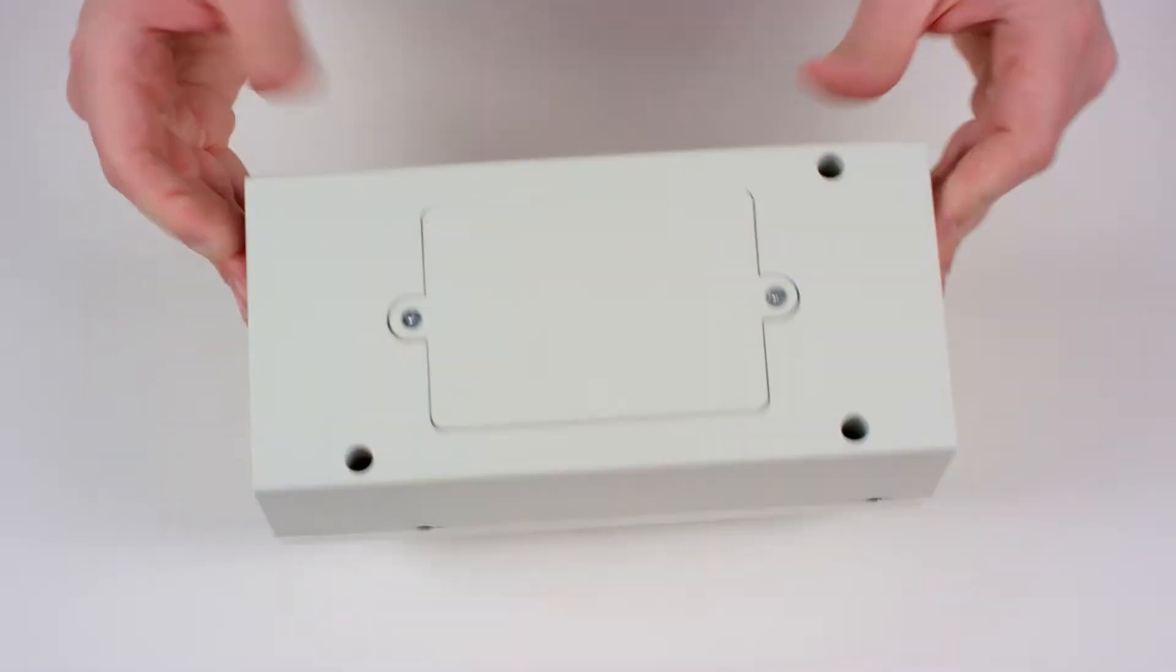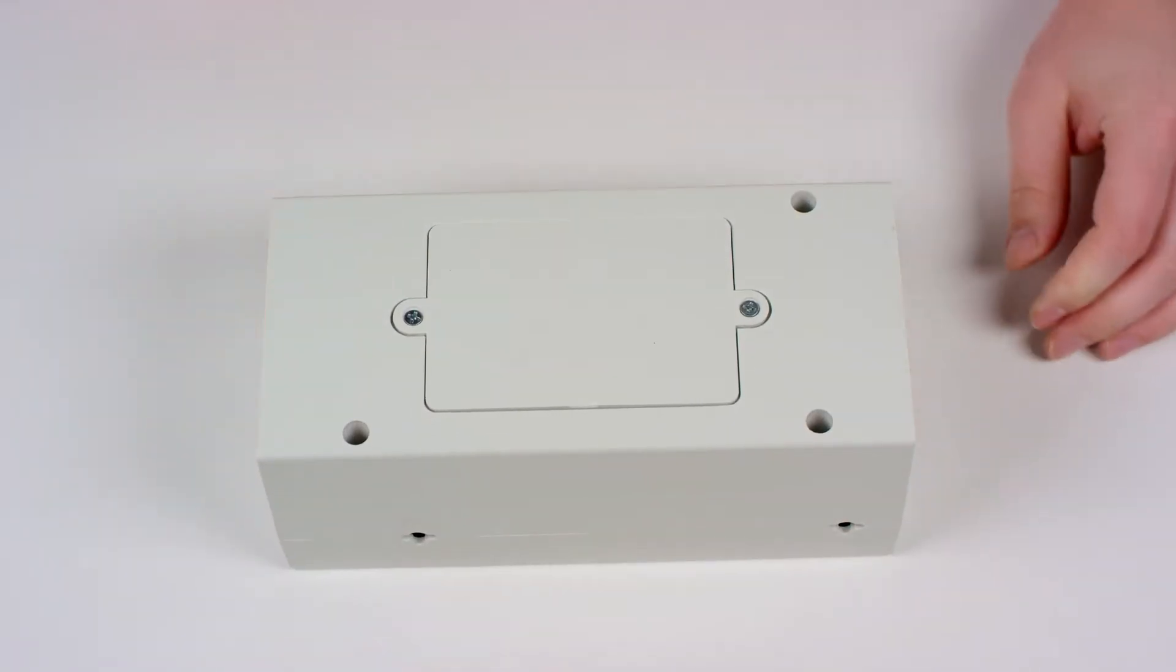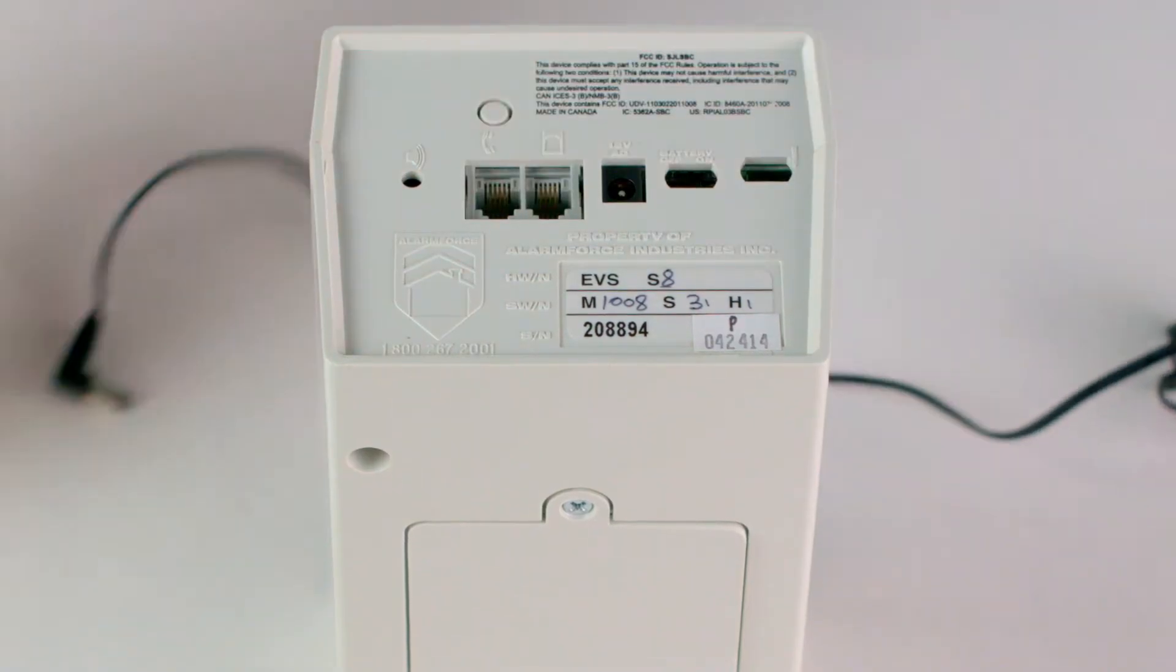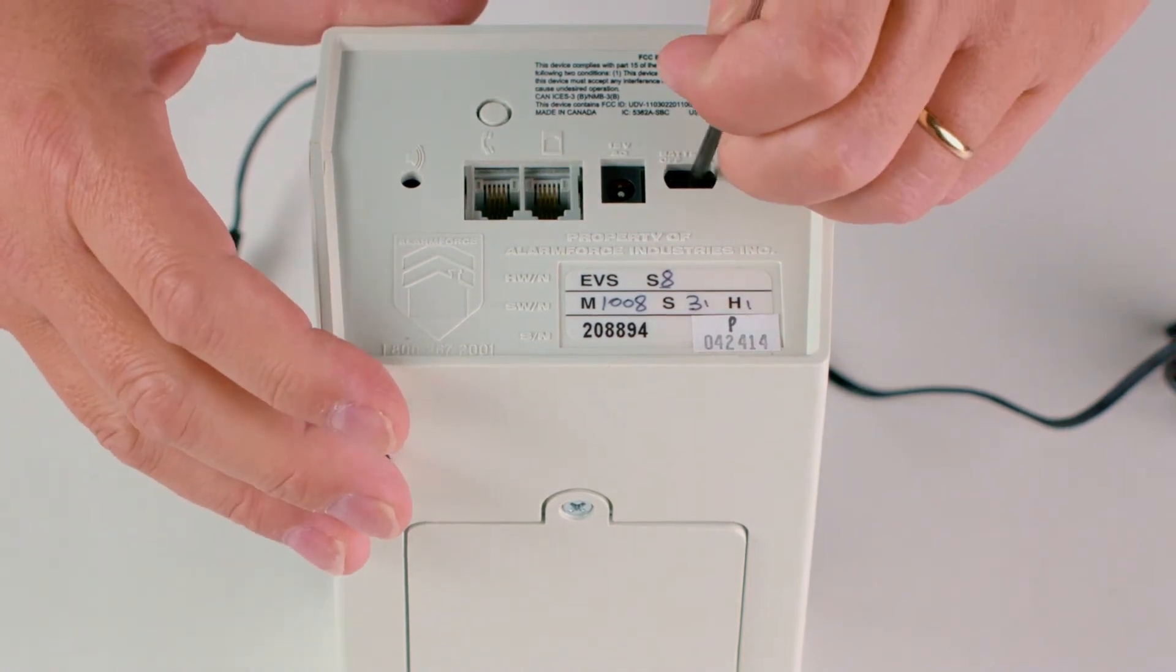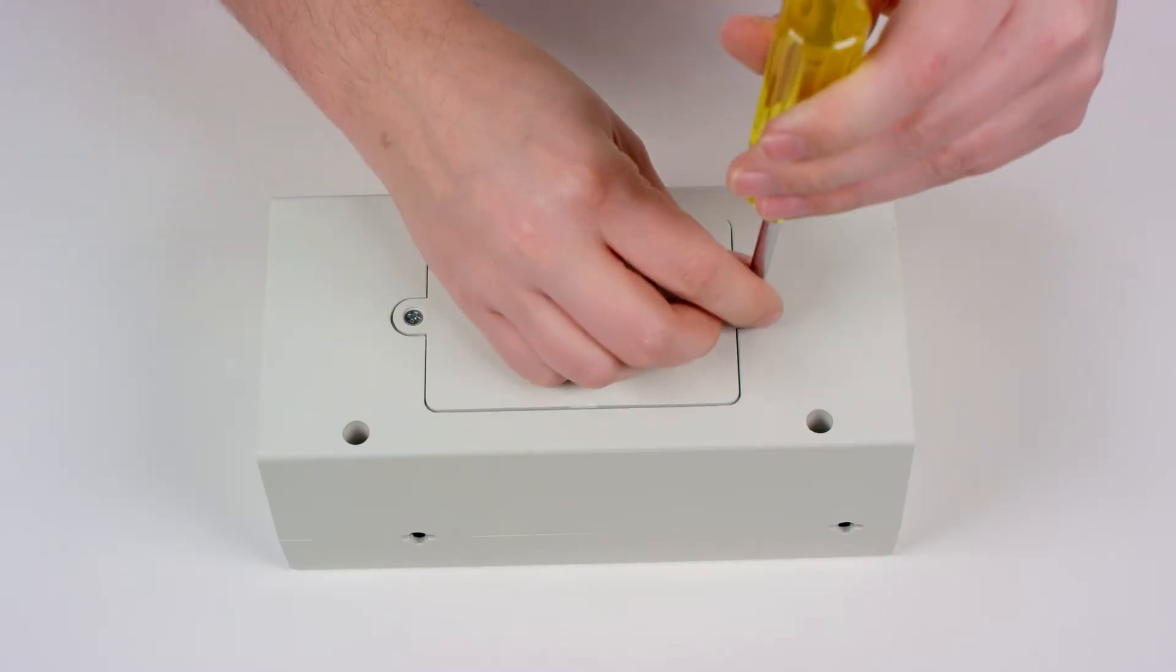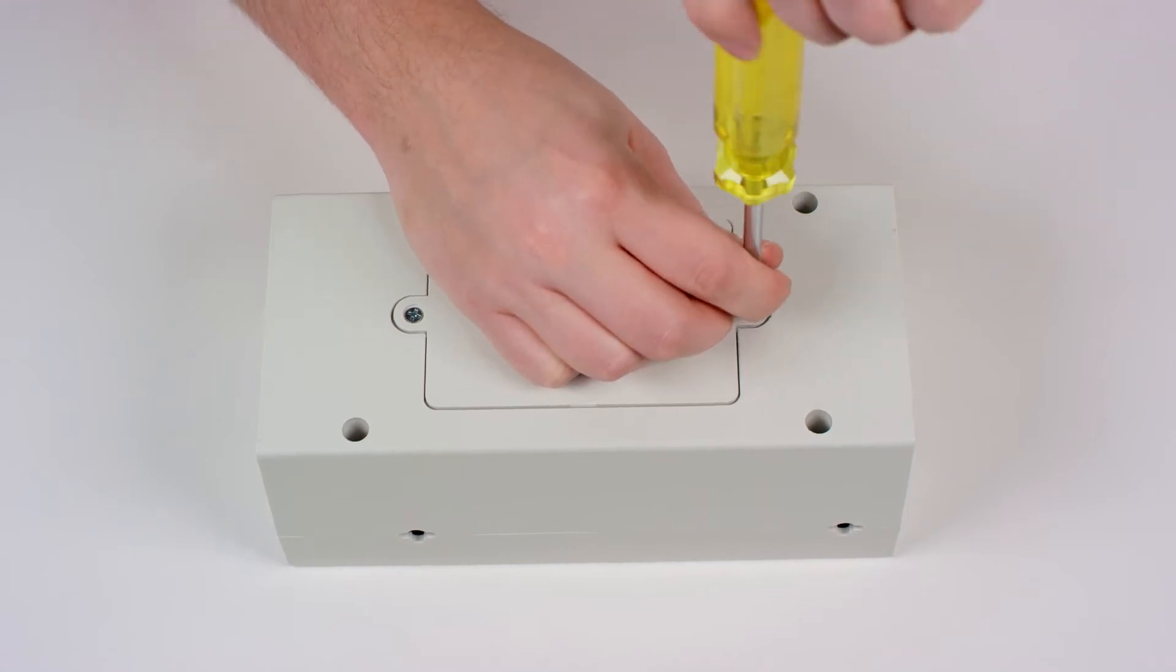To change the battery on your control panel, first make sure your system is disarmed. On the panel, unplug the power switch and switch off the battery. Remove the panel lid to access the battery. This may require removing a screw with a Phillips head screwdriver.